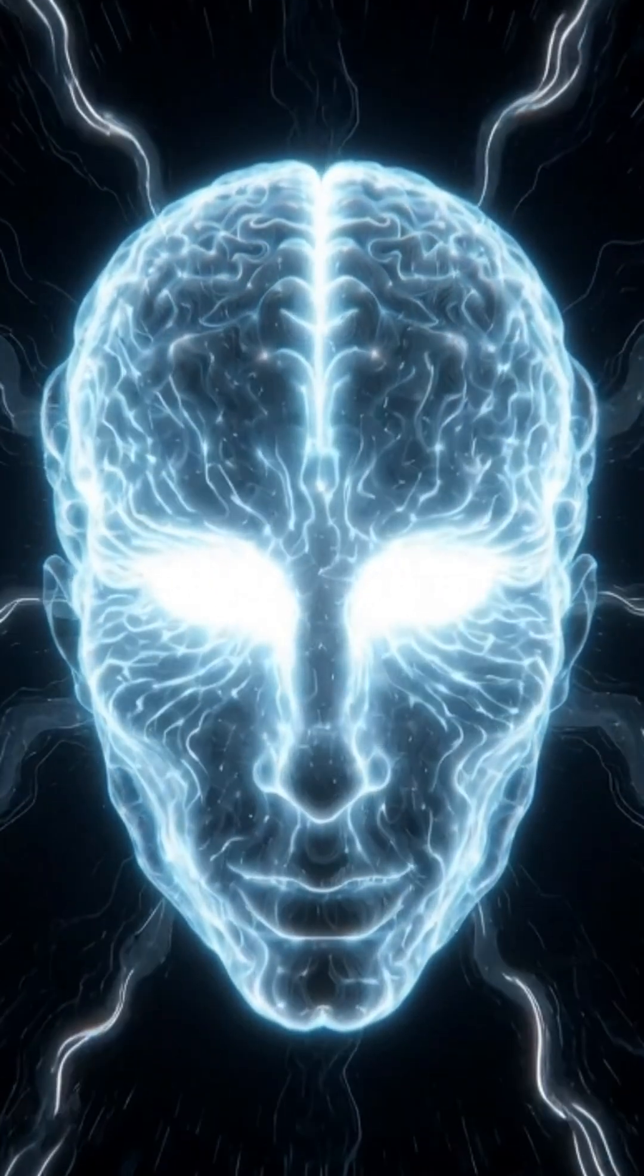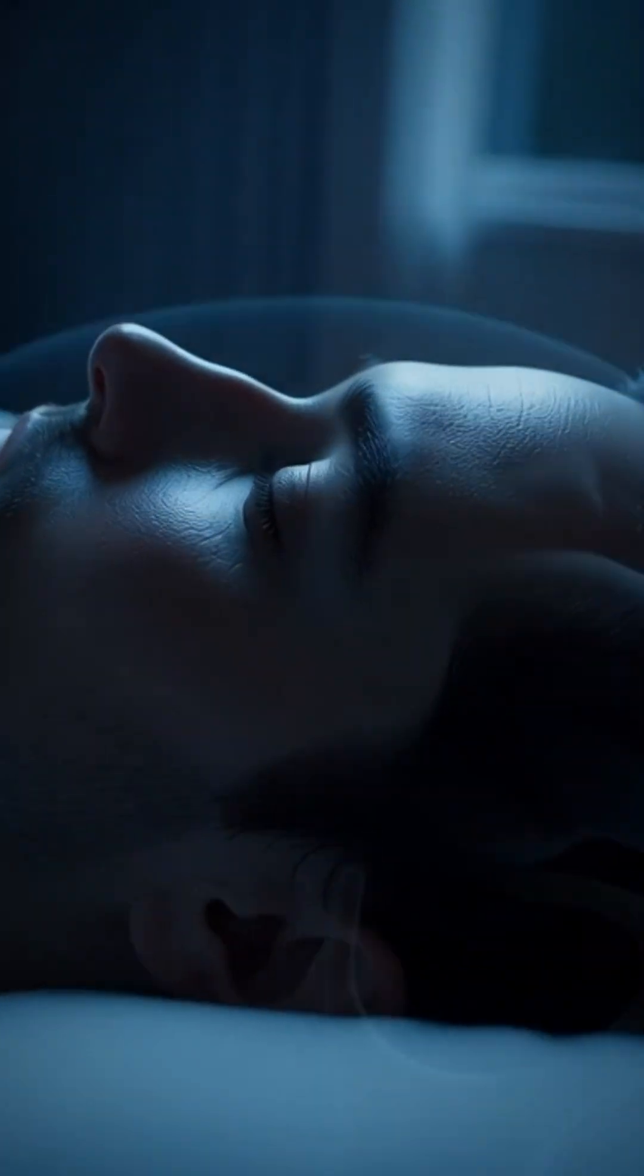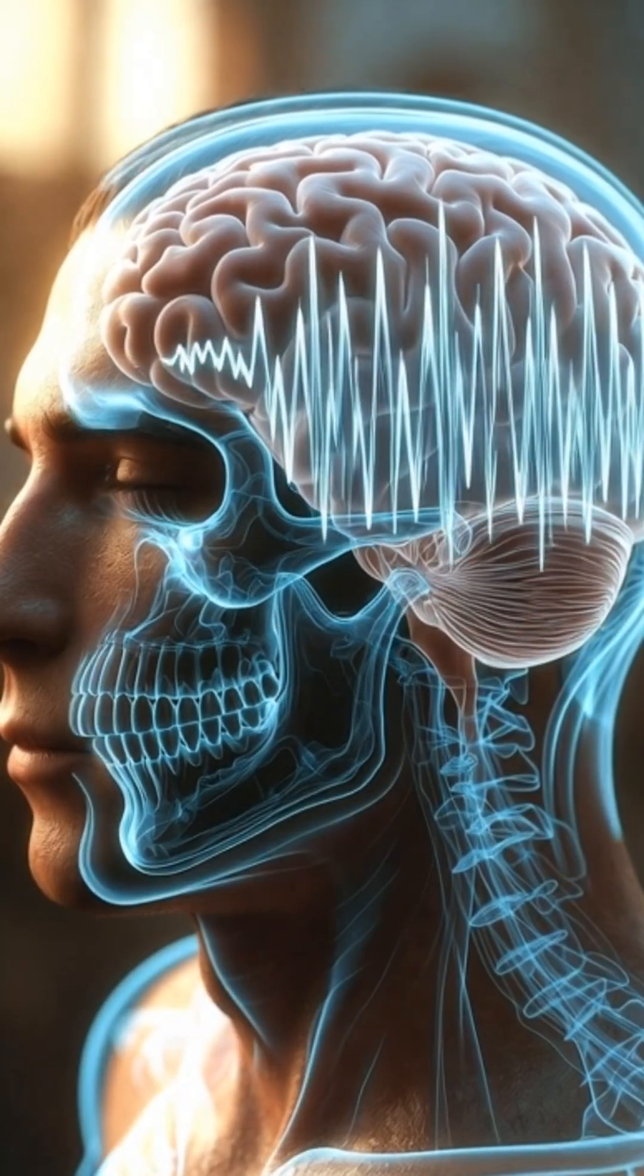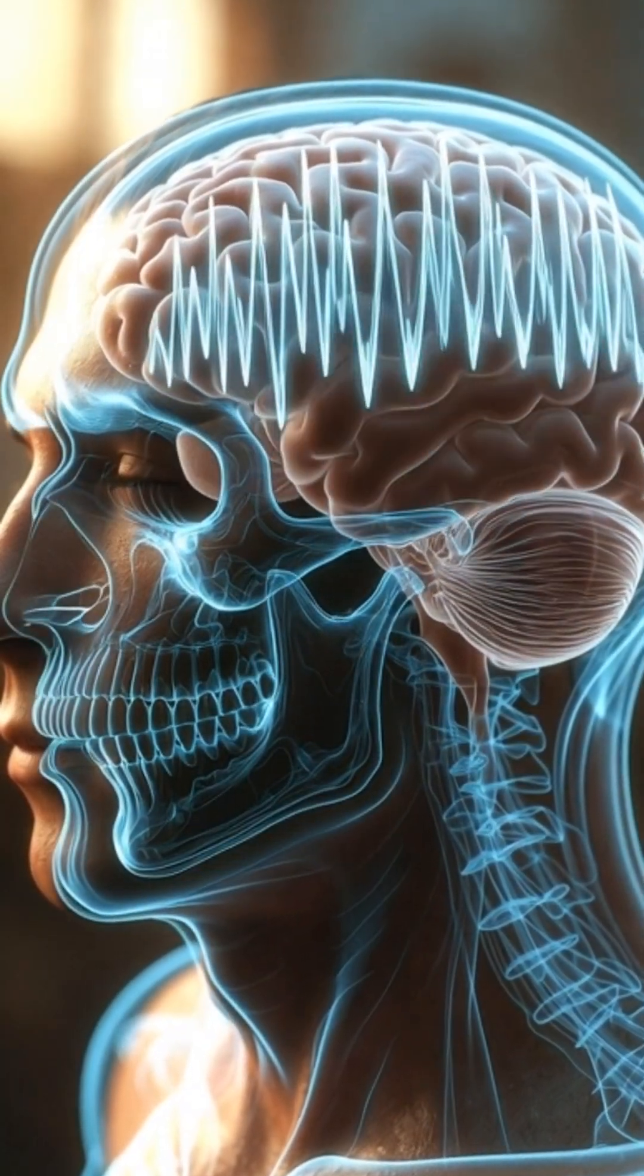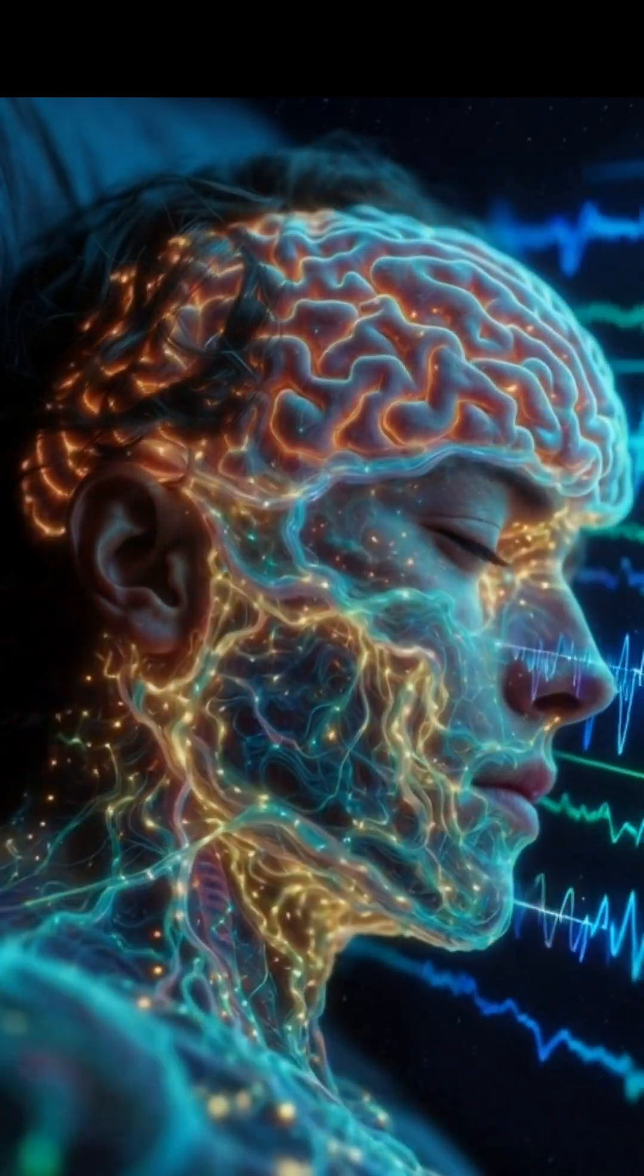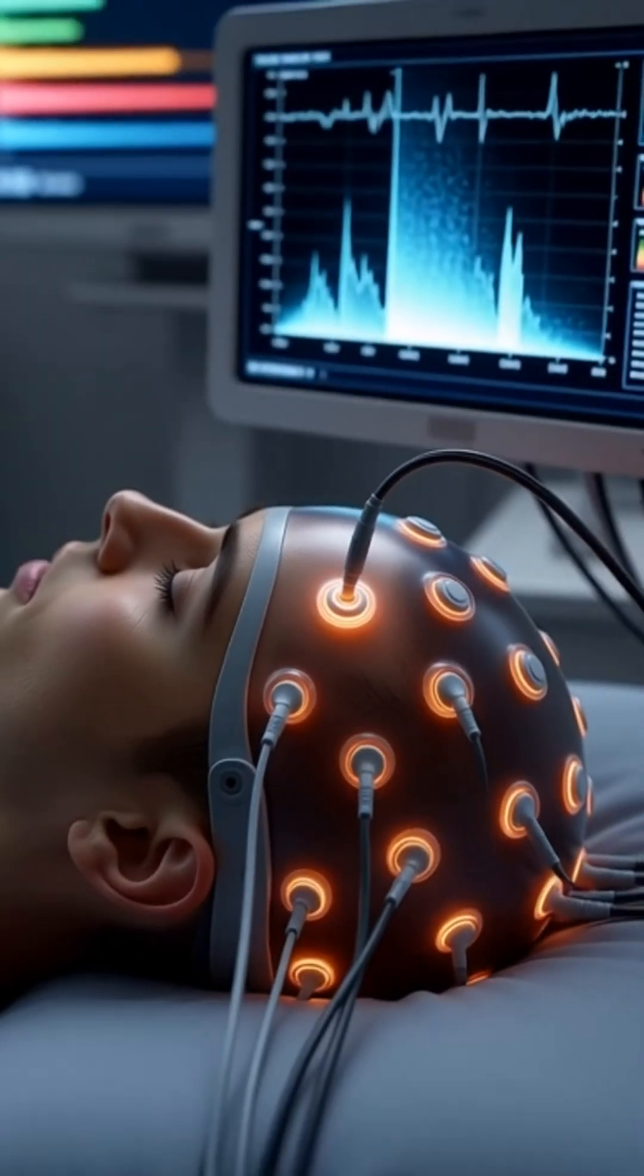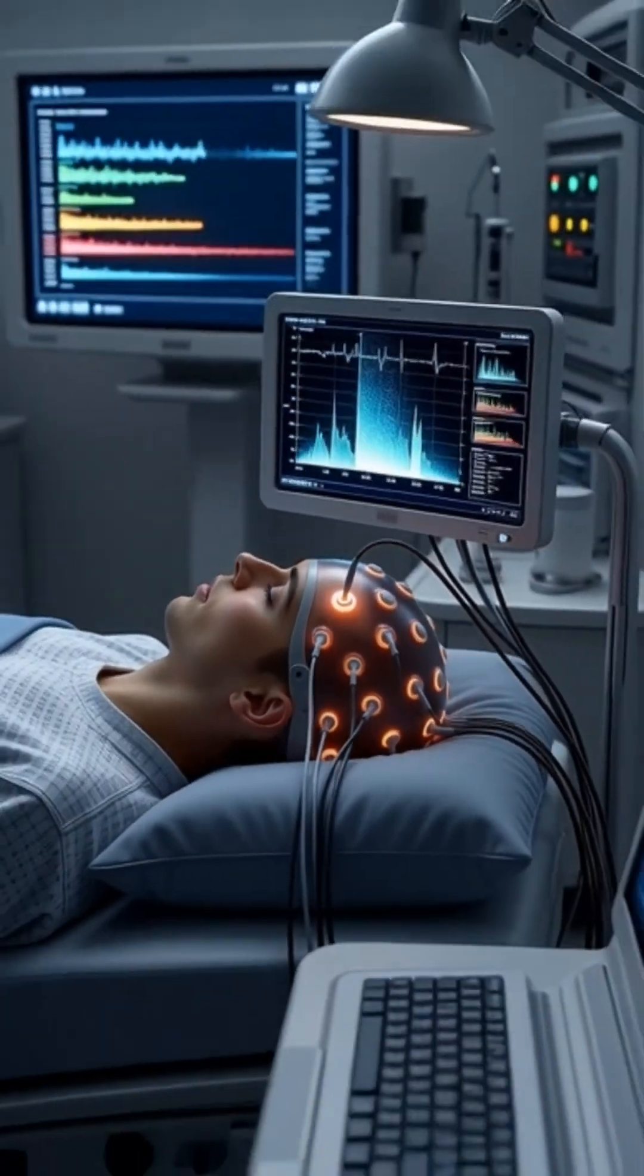When you sleep, your brain hums with electrical rhythms—waves that carry hints of feelings, memories, and dreams. But can machines read those waves and tell us how we feel? To read brain waves, we use EEG.